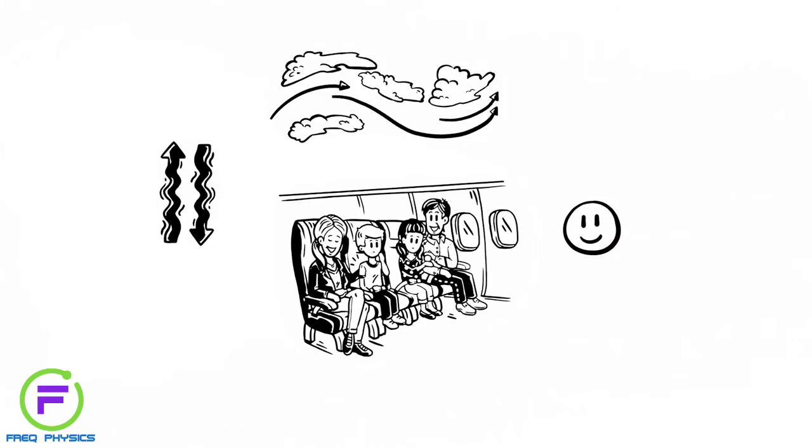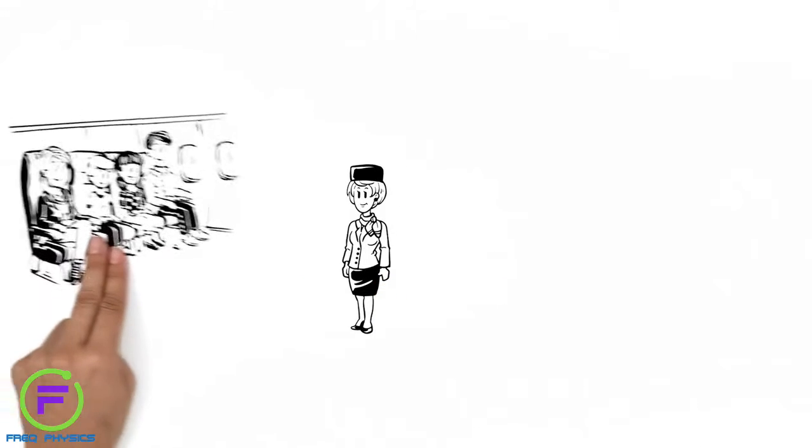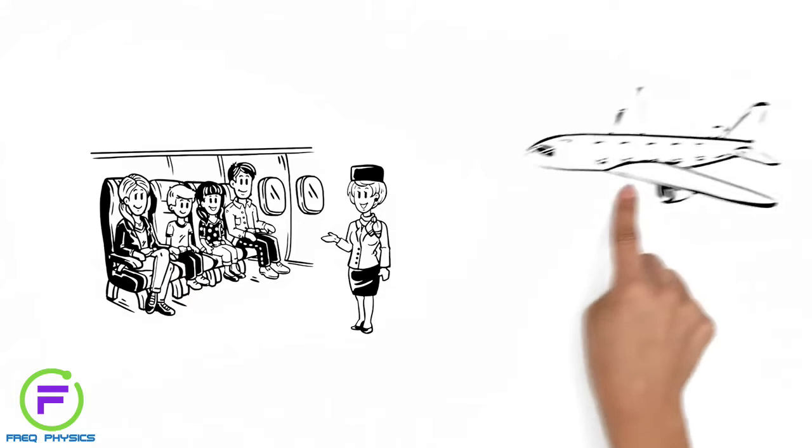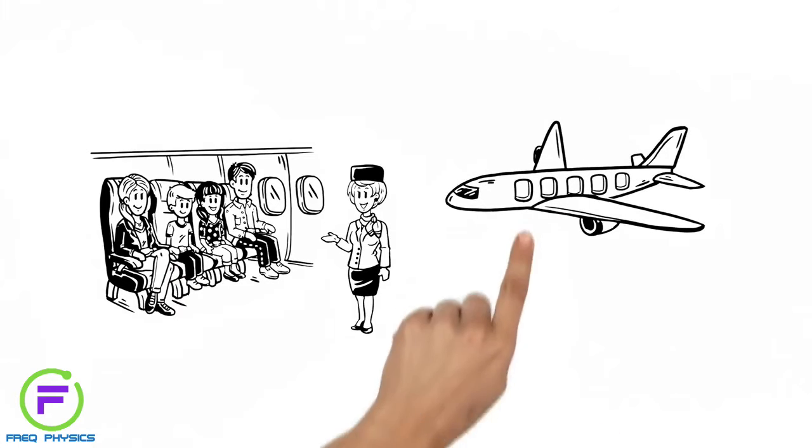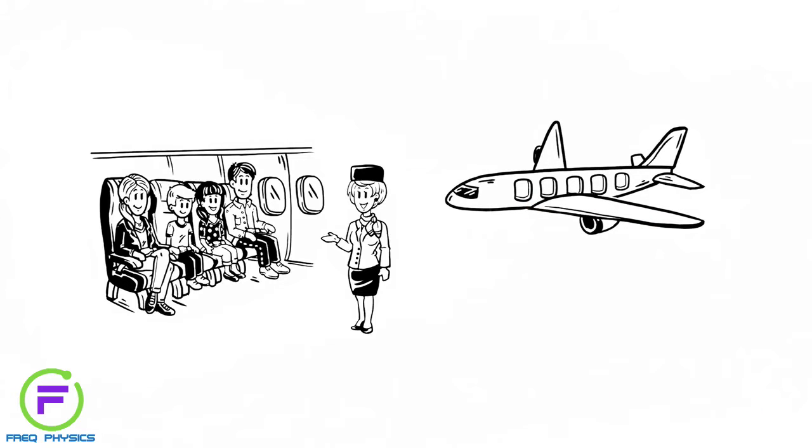And usually, turbulence is over quickly, just like now. Flight attendant Olivia overhears the family's conversation and is happy to share her knowledge. She explains that planes, especially their wings, are designed to be flexible. This way they're able to withstand high forces and won't break due to turbulence.